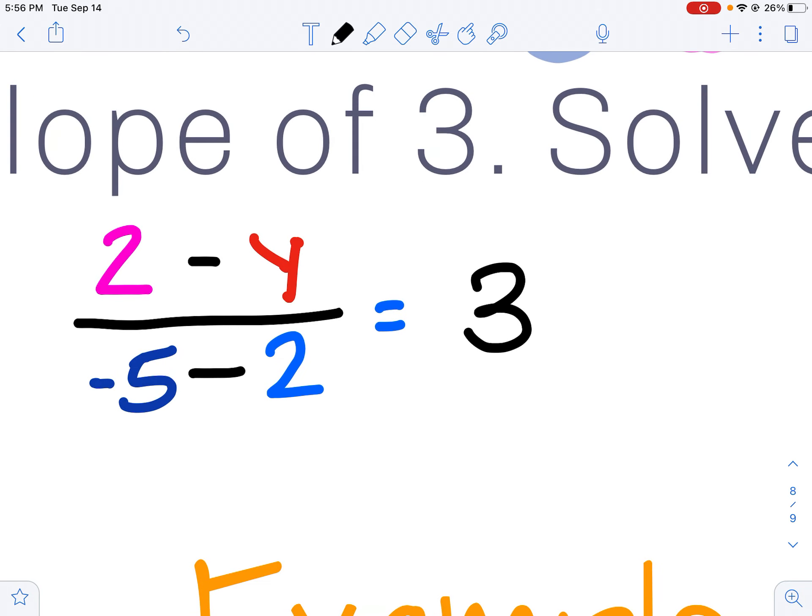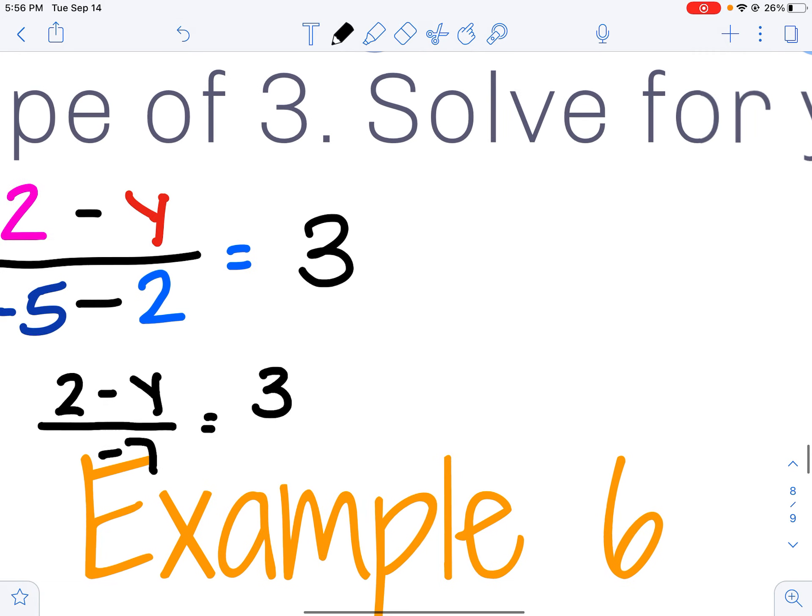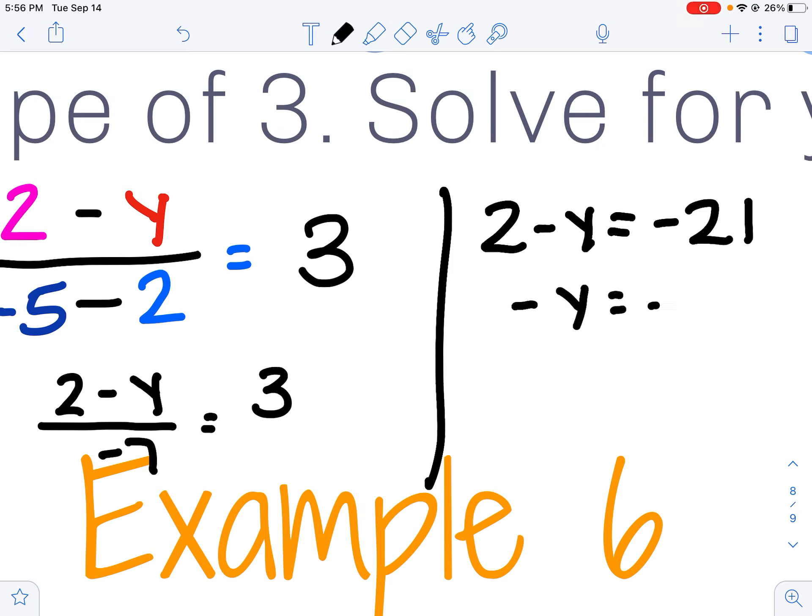And now I'm just doing some algebra. I'll get 2 minus y divided by negative 7 equals 3. Go ahead and multiply both sides by negative 7 and I get 2 minus y equals negative 21. Subtract 2 and I get negative y equals negative 23, so y must equal 23.